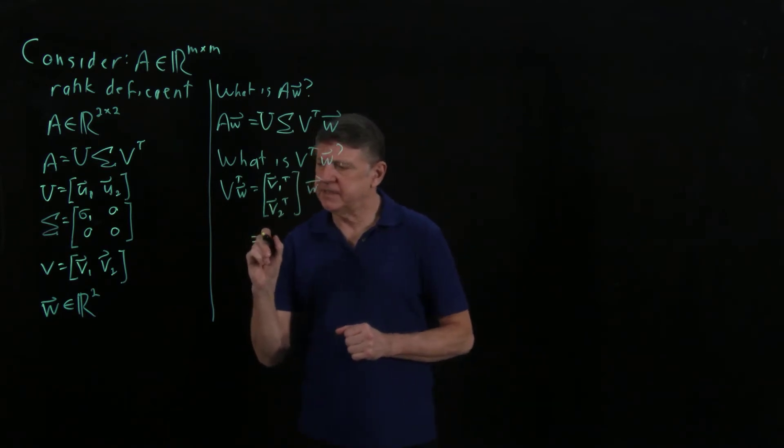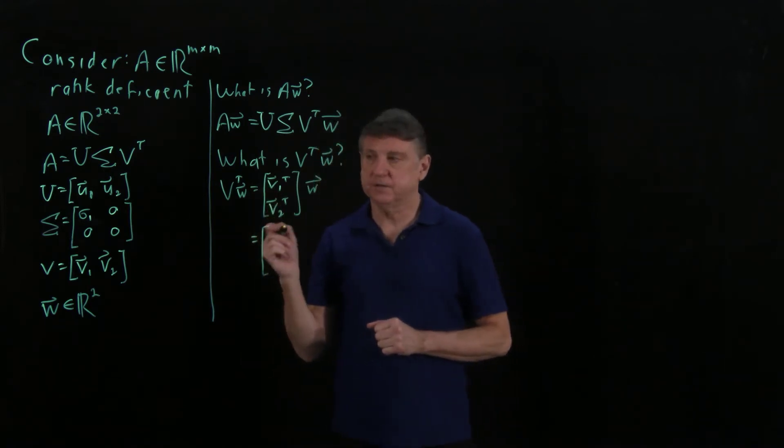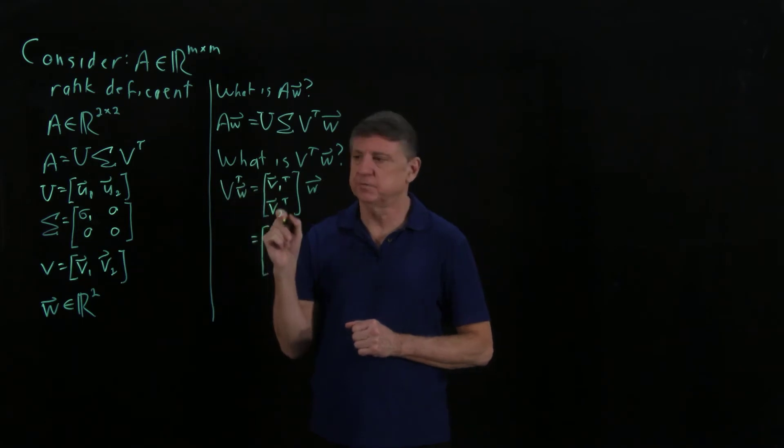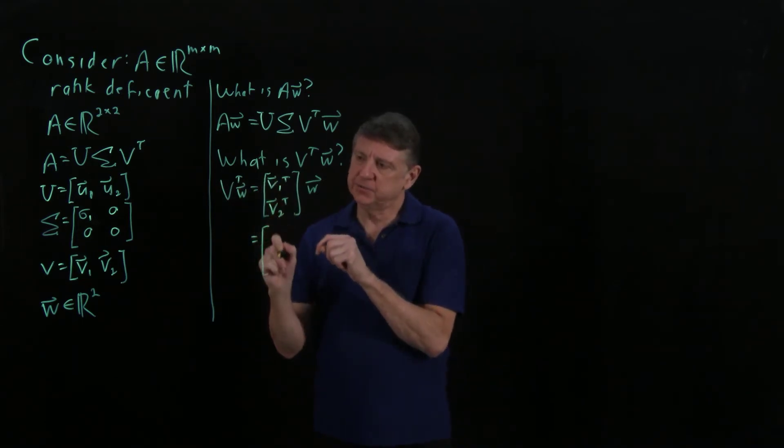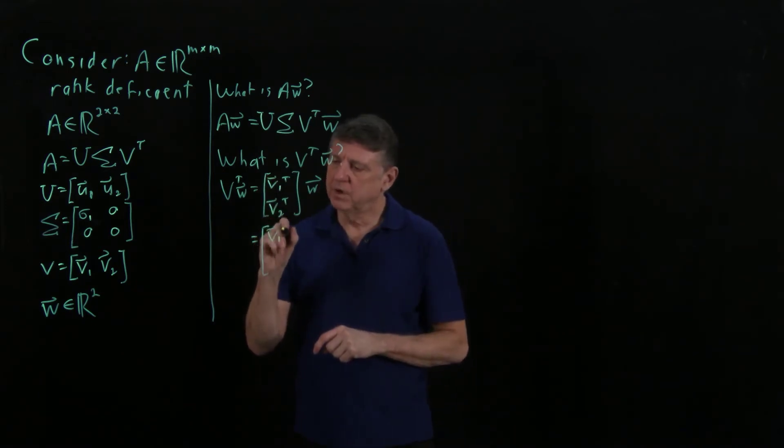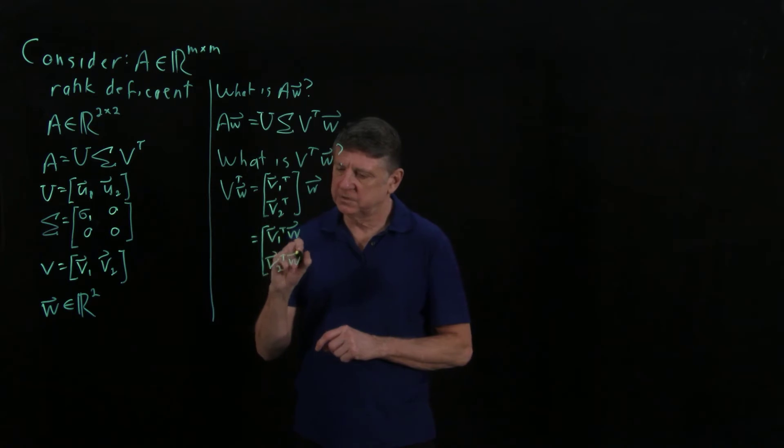And that has to equal, when we do the multiplication, this has to be a size 2 vector, because a 2 by 2 matrix times a size 2 vector is a size 2 vector. And what is the first entry of this? Well, that is V1 transpose times W times V2 transpose times W.